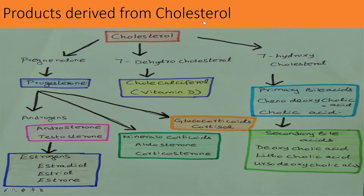From cholesterol, we also get 7-hydroxycholesterol, which can be converted into primary bile acids — chenodeoxycholic acid and cholic acid. From these, we can get secondary bile acids: deoxycholic acid, lithocholic acid, and ursodeoxycholic acid.